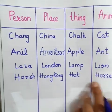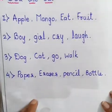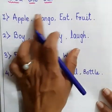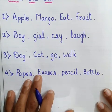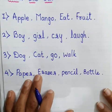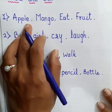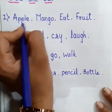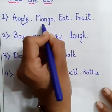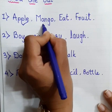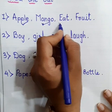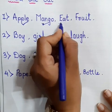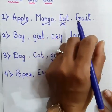I have something for you. Look at this — odd one out. What you have to do is read all the words and tick or cross the word which is not the name of anything. Apple — is it a name? Yes, it is a name, so it is a noun. Mango — is it a name? Yes, it is a name, so it is also a noun. 'It' — is it a name? No, it is an action, so it is not a noun.